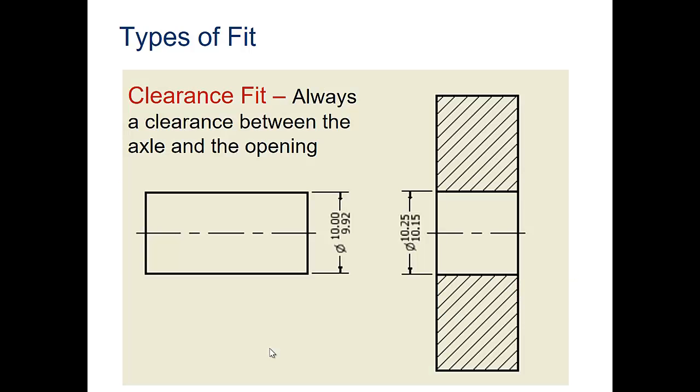A clearance fit always has a clearance between the axle and the opening. Here we see an axle that needs to be inserted into this hole. The axle has an upper and lower limit, and the hole has an upper and lower limit also. No matter how big this axle is, the biggest it can be is 10.00, it will still be smaller than the smallest the hole can be, 10.15. So when you insert this axle at the largest dimension possible with this hole at the smallest dimension possible, you will still have clearance of 0.15 between the axle and the hole. It's made to go in without any friction.